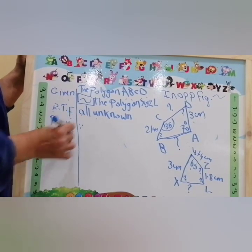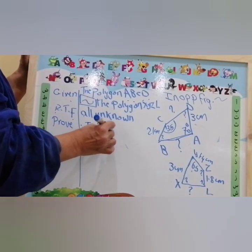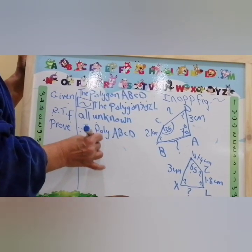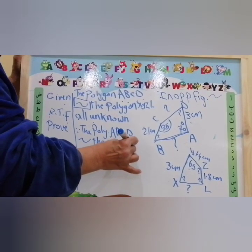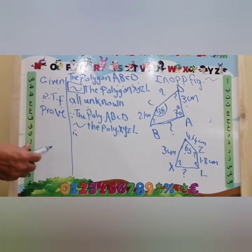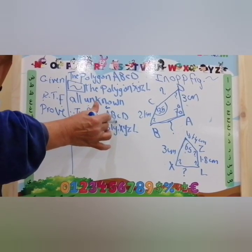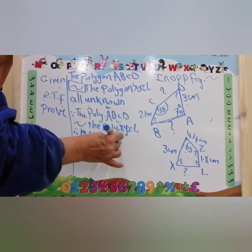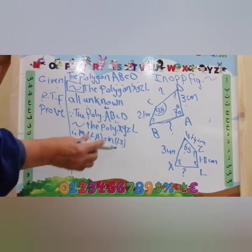Since polygon ABCD is similar to polygon XYZL, therefore measure angle A equals measure angle X. The measure of angle A is 70°, so measure angle X equals 70 degrees.